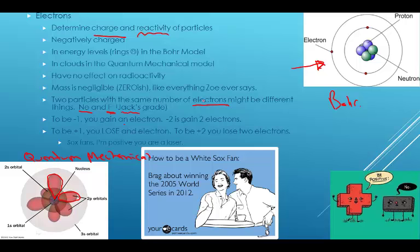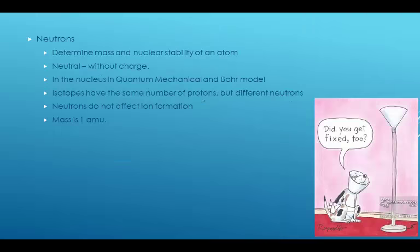To be negative 1, you gain an electron. To be negative 2, you gain two electrons. To be positive 1, you lose one electron. To be positive 2, you lose two electrons. So whenever you change your charge, you don't change protons, you change electrons. Sox fans, I'm positive you are a loser. So to be positive, you have to lose.